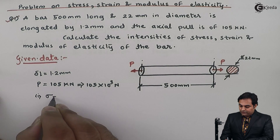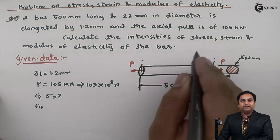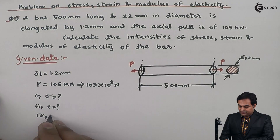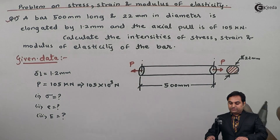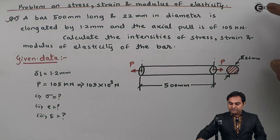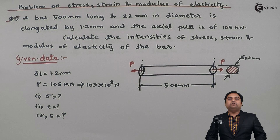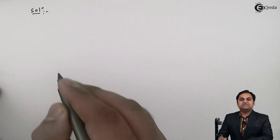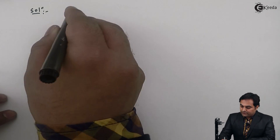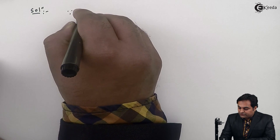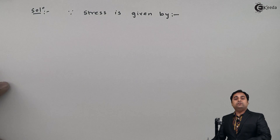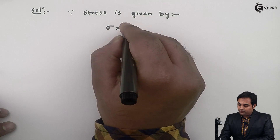We have to calculate three things: first, the value of stress; second, strain; and third, the modulus of elasticity capital E. Now for the solution, since stress is given by the formula Sigma equals P upon A.